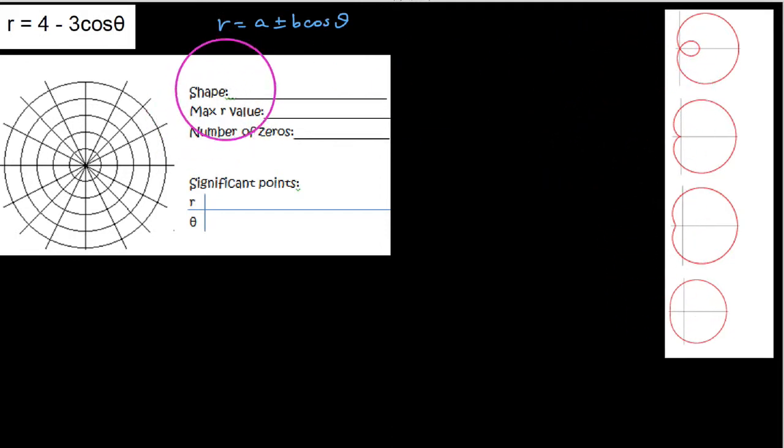And in terms of determining what shape this is, recall that what we're going to do is we're going to compare the values of a and b here. And we say a is always this loose constant and b is always the coefficient of our trig function. But if we assume a and b being positive, that is we neglect this negative right here, then we could say that a in this case is 4 and b in this case is 3.